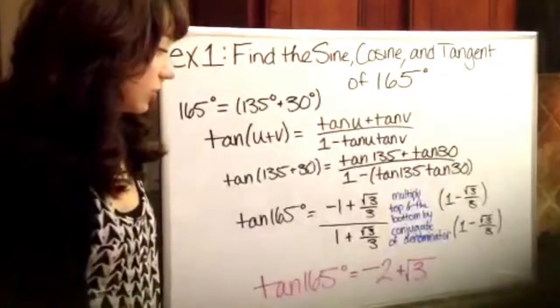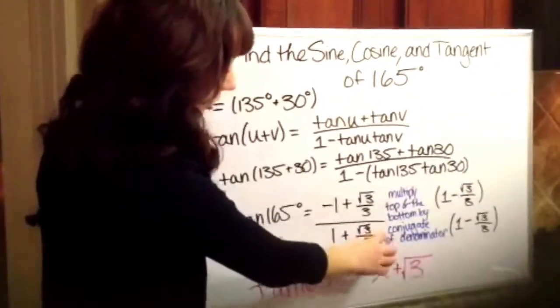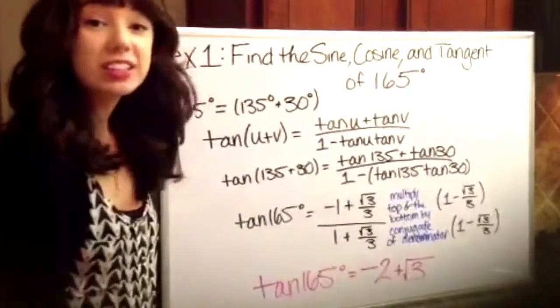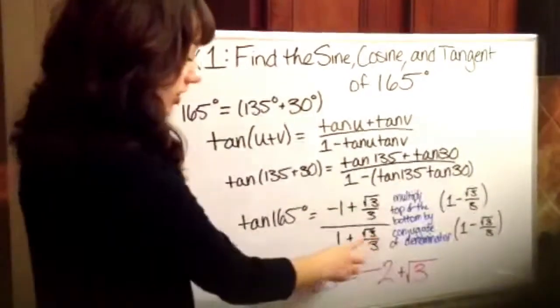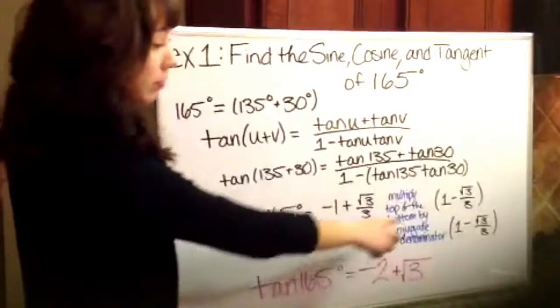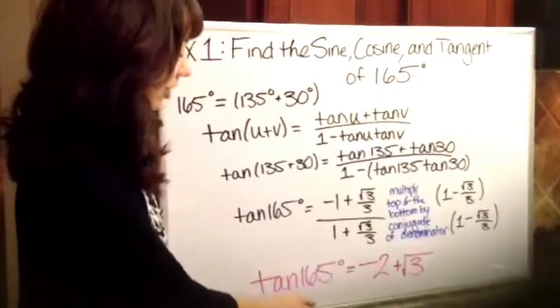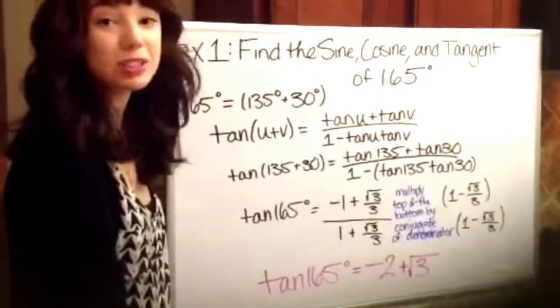So what you want to do is you want to multiply the top and the bottom by the conjugate of the denominator. So basically what that just means is switch the sign right here and multiply it. So once you multiply by the conjugate you get negative 2 plus the square root of 3.